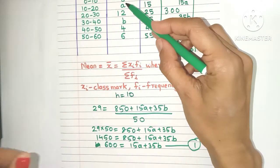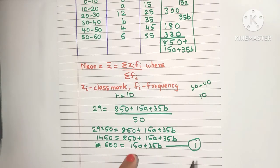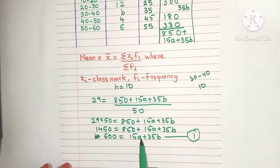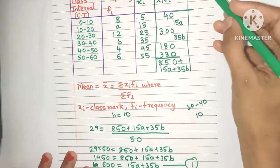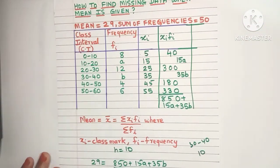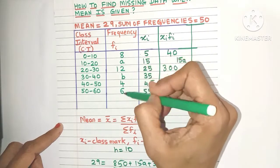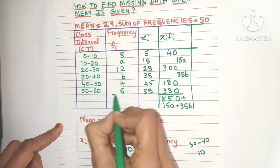If you're asked to find only one missing frequency, you'll have only one variable and this one equation is enough. But here you have two variables and only one equation, which means we need to find another equation. Now where do we get that? It's given to us: the sum of frequencies is 50, but we can also find the sum by adding all the frequency values.